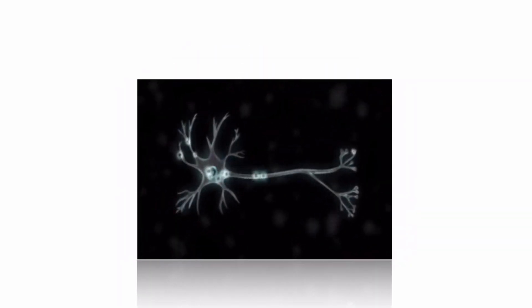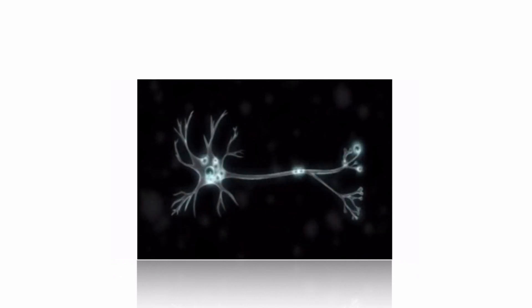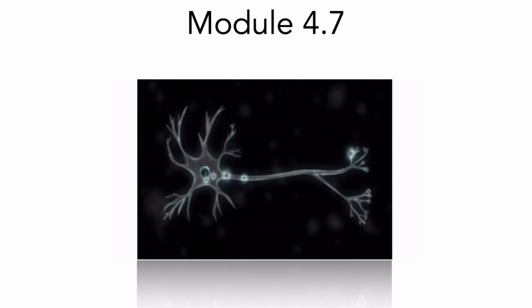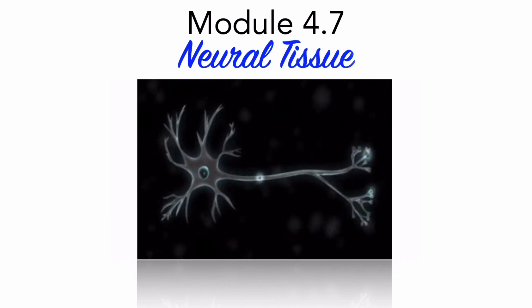We will give considerable attention to the anatomy and physiology of neural tissue in module 8. For now, as one of the four basic tissue types of the human body, in module 4.7 we briefly discuss the basic structures and functions of neural tissue.